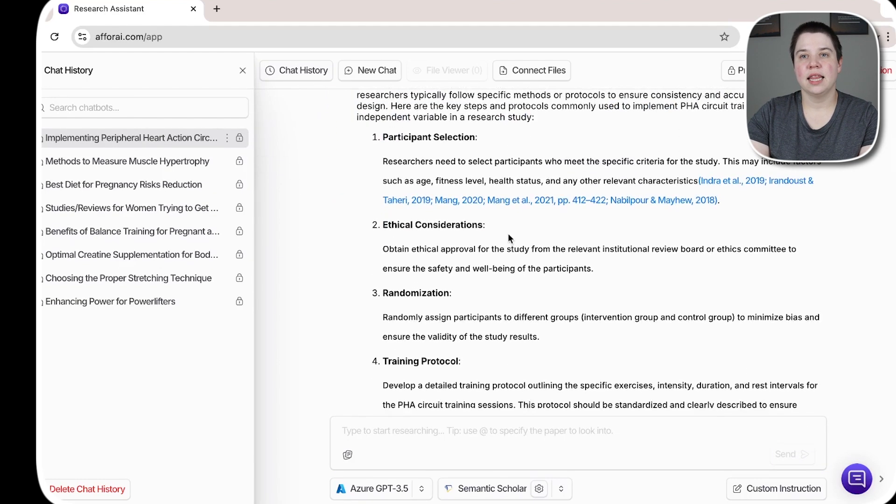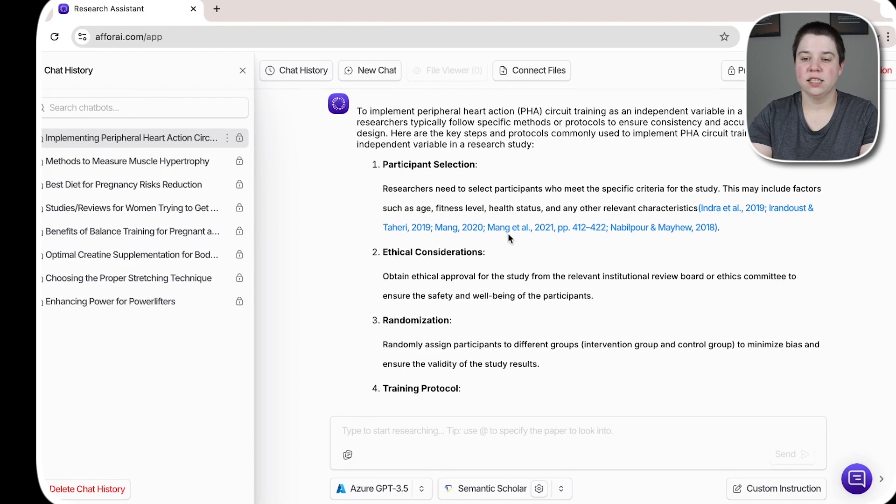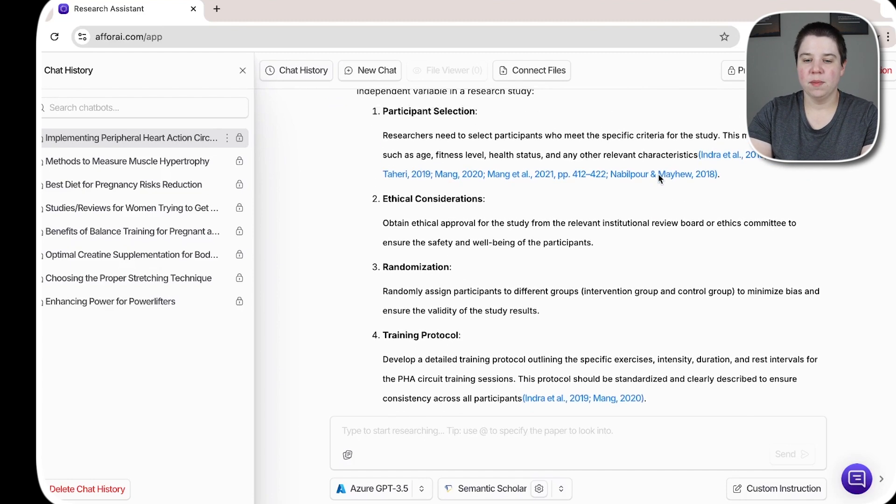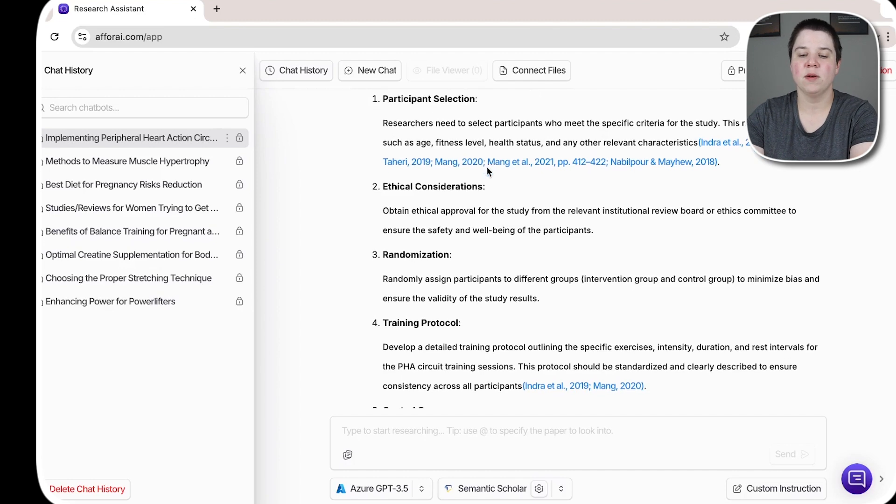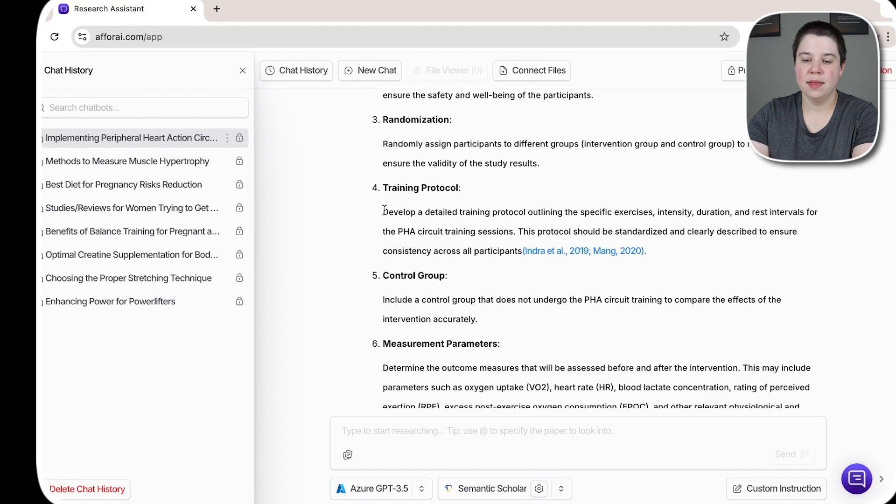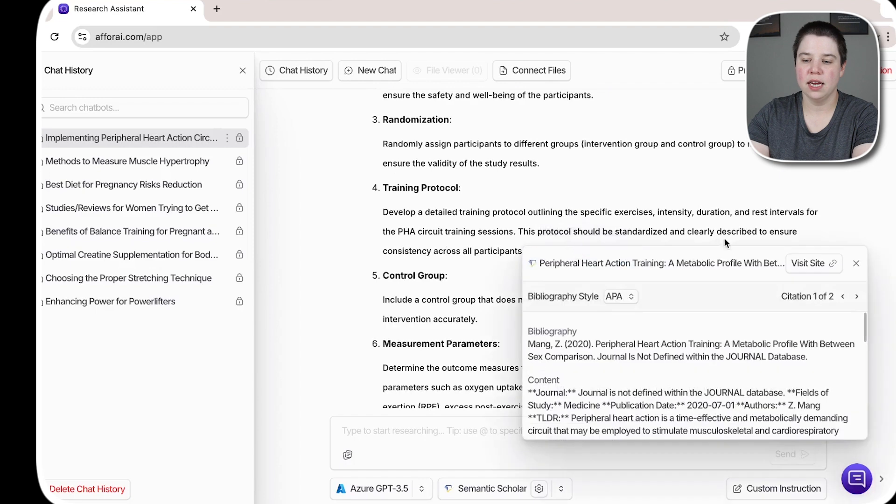So we can see that this talks about a lot of different things. It takes a lot of things from papers that have used a PHA or peripheral heart action circuit training. And so it talks about participant selection and specific factors. So this is kind of our population and controlling confounding variables. It talks about ethical considerations, randomization, and then a training protocol. So I can look in here and see that this has, I can go and visit the site and this will open it up in Semantic Scholar.